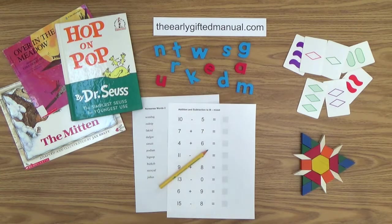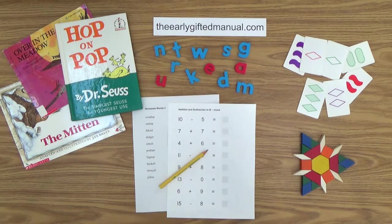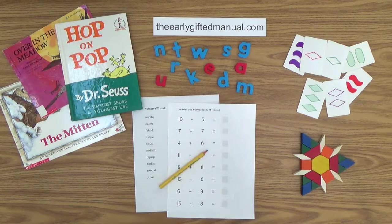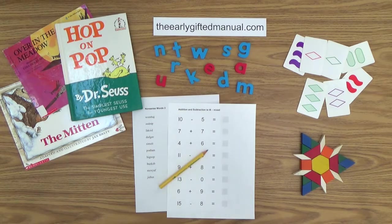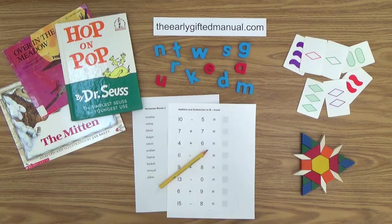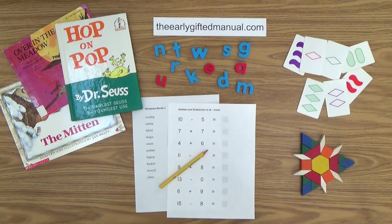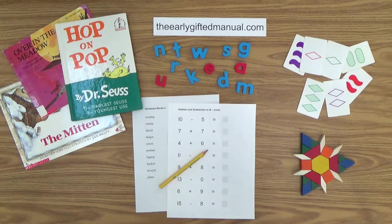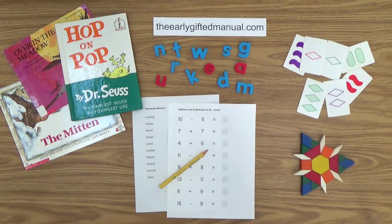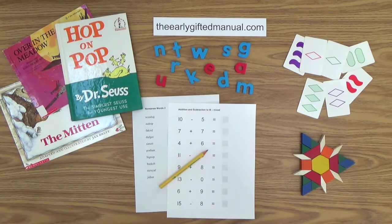As the video lessons are designed to work in conjunction with the program on my website, I ask you to, at some point, click on the URL link in the description box below and this action will take you to theearlygiftedmanual.com. By doing that, you will be able to put this lesson and all of the video lessons here on my channel in the proper context of the total program that I am presenting to you and your child.